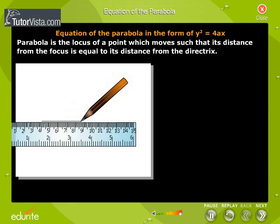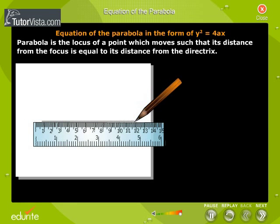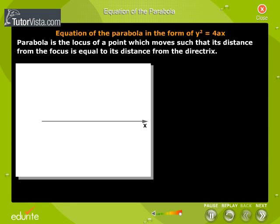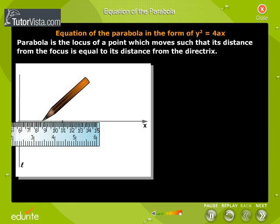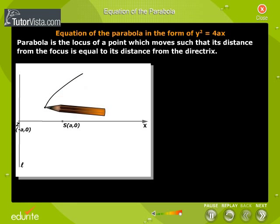Equation of the parabola in the form y squared is equal to 4ax. A parabola is the locus of a point which moves such that its distance from the focus is equal to its distance from the directrix.